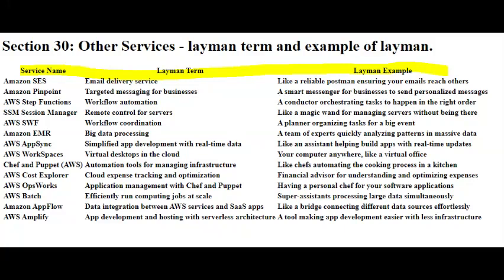AWS SWF, or Simple Workflow Service, is like an orchestration conductor for your tasks. It helps you manage and automate the flow of work across different processes, making sure everything gets done smoothly without you having to micromanage each step.